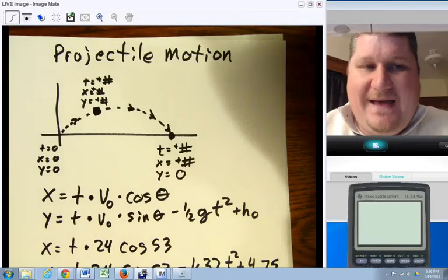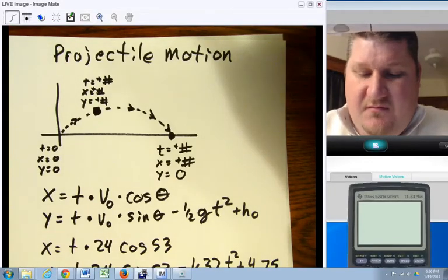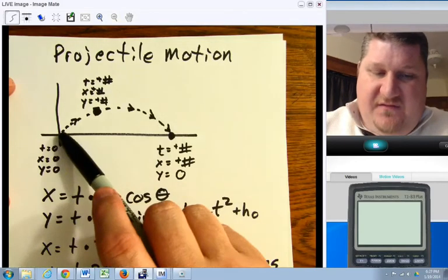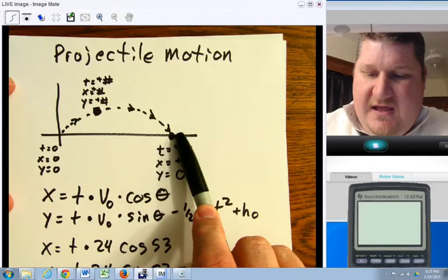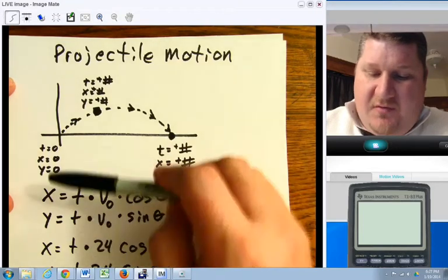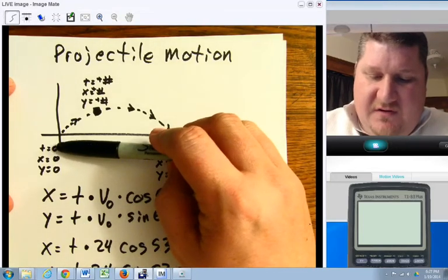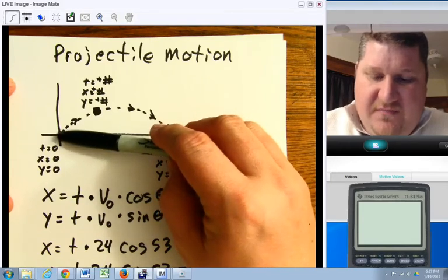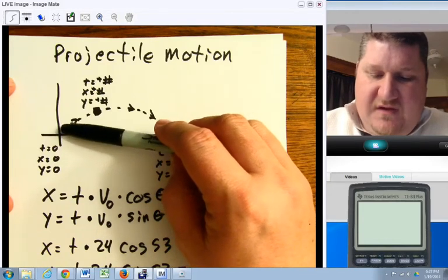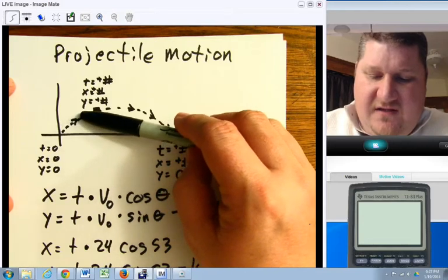All right, now we're going to go back and revisit the topic of projectile motion. Remember, if I have some sort of projectile that begins here and moves through a ballistic path to here, I'm going to have time t equals 0, x is 0 because it hasn't gone horizontally, y is 0 because it hasn't gone vertically, but then as it moves, its x and its y change as the time moves.